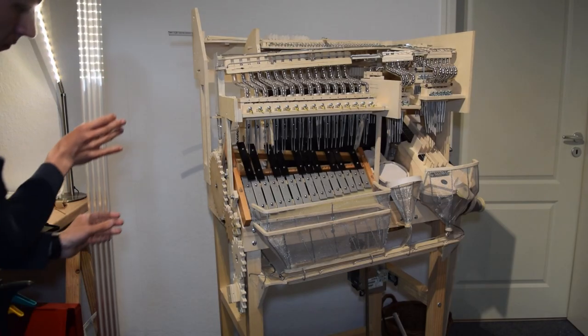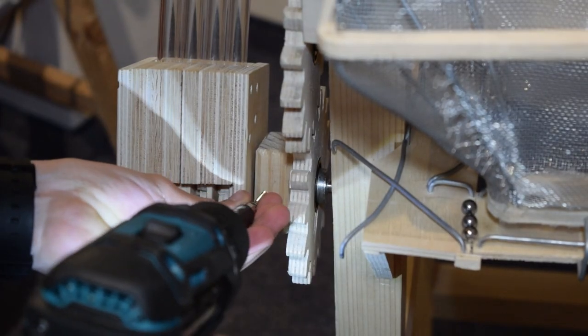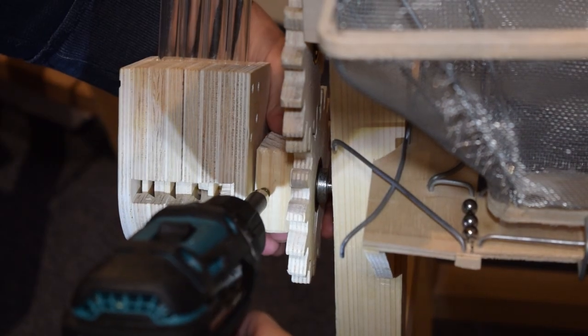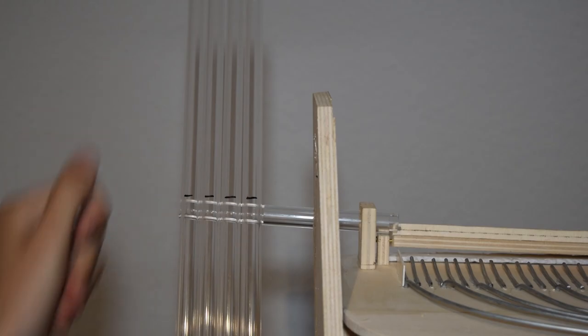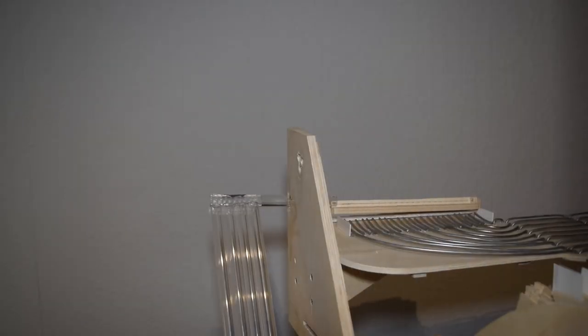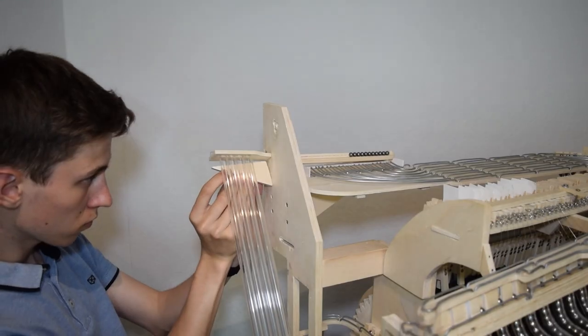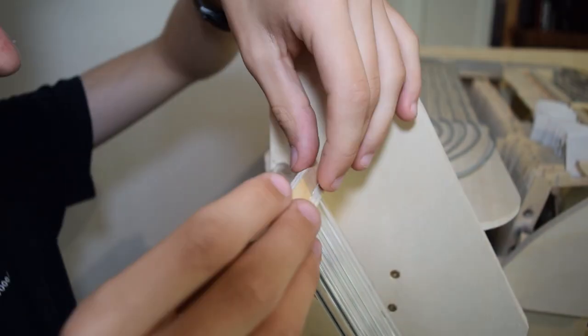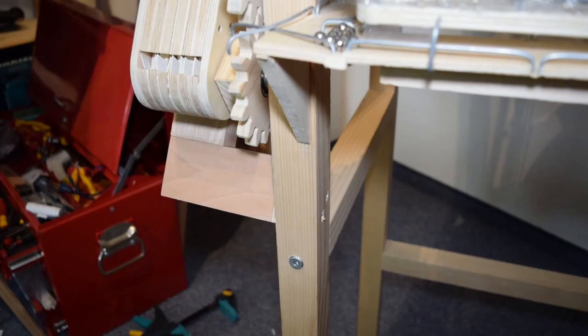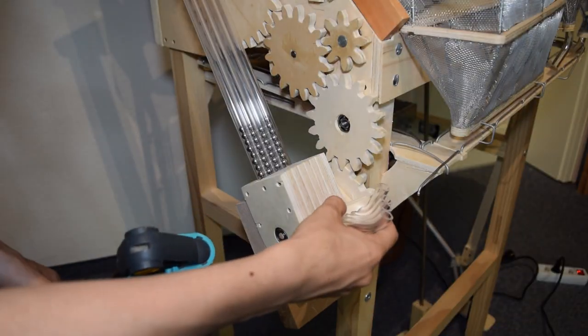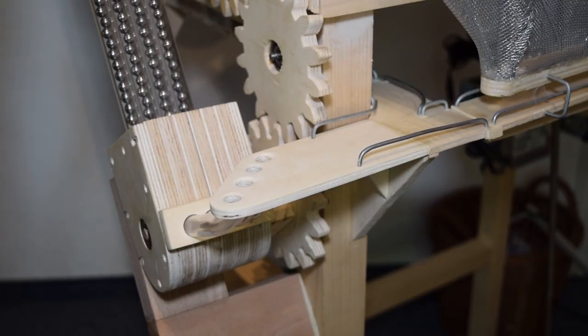After all this I finally put a new marble lift on the machine. It has only a small movable connection to it here at the bottom. At the top I designed the marble exit which leads to the marble divider at the top. At the end I built the marble entry so that all the marbles get into the marble lift.